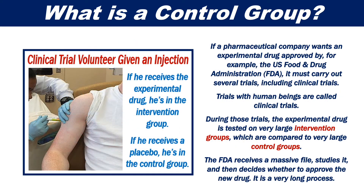If a pharmaceutical company wants an experimental drug approved by, for example, the US Food and Drug Administration, it must carry out several trials, including clinical trials. During those trials, the experimental drug is tested on very large intervention groups, which are compared to very large control groups. The FDA receives a massive file, studies it, and then decides whether to approve the new drug. It is a very long process.